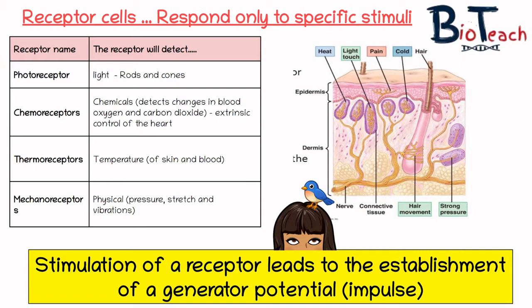Not shown on the image on the right are photoreceptors. You'll learn about these when you look at the eye — photoreceptors are there to detect light, and the receptor cells you'll learn about are rods and cones. We also have chemoreceptors, which are responsible for detecting chemicals — you'll learn about these when you look at the extrinsic control of the heart. In your skin you've got thermoreceptors which detect temperature, and we've also got mechanoreceptors which respond to physical pressure, stretch, or vibrations.